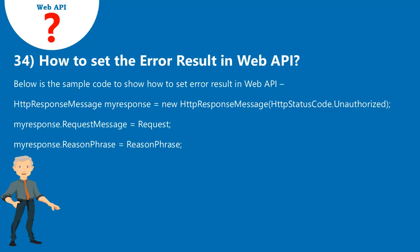Question 34: How to set the error result in Web API? Below is the sample code to show how to set the error result in Web API: HttpResponseMessage myResponse = new HttpResponseMessage(HttpStatusCode.Unauthorized); myResponse.RequestMessage = request; myResponse.ReasonPhrase = reasonPhrase.